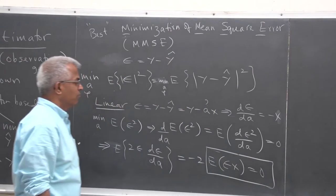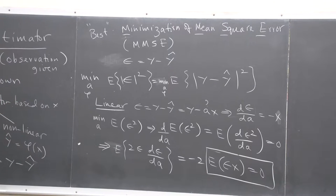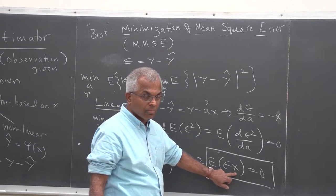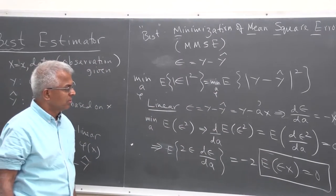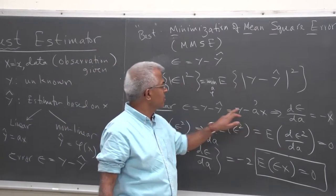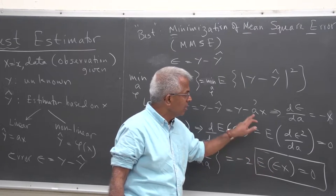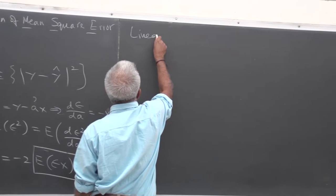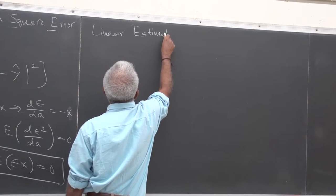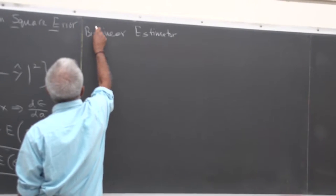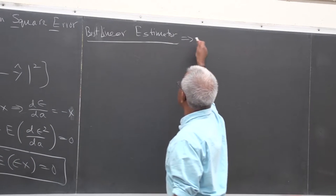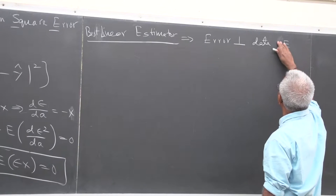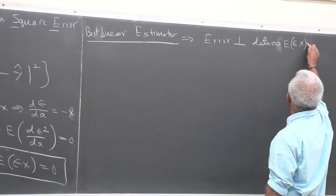So we get that E[epsilon * x] = 0 — minus 2 is a constant and can be ignored. This is the definition for two random variables to be orthogonal. We come up with a fundamental principle in linear estimation: the constant A should be selected such that the error is orthogonal to the data. The best linear estimator says the error is orthogonal to the data, i.e., E[epsilon * x] = 0.